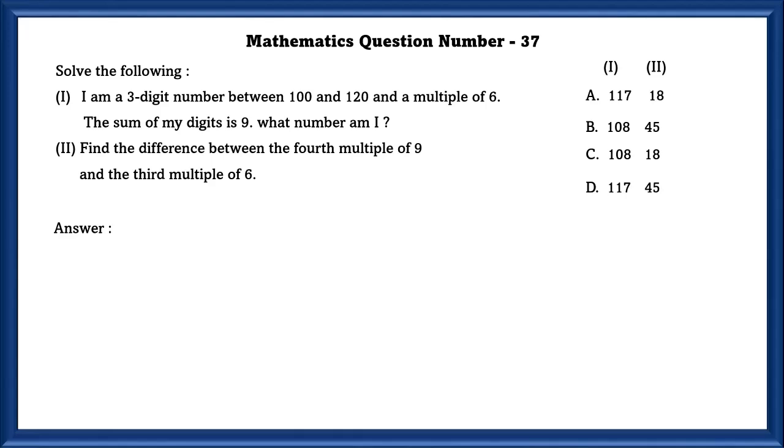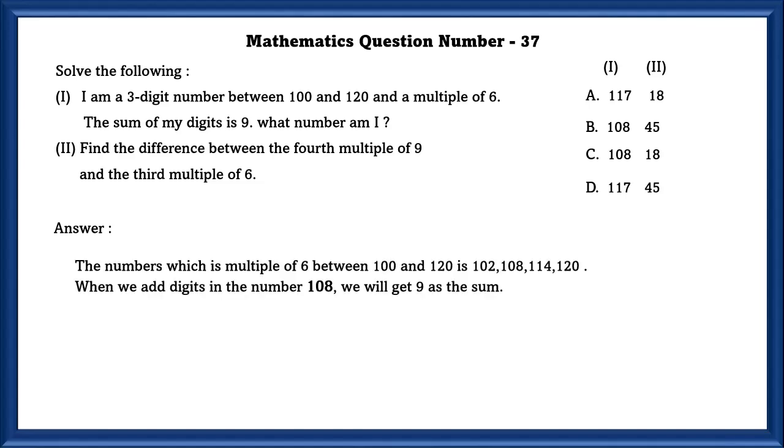Mathematics question number 37. Solve the following. I am a three-digit number between 100 and 120 and a multiple of 6. The sum of my digits is 9. What am I? So the three-digit numbers between 100 and 120 and multiples of 6 are 102, 108, 114, and 120. When we add the digits, we should get 9 as the sum. So as we can see here, if we add 108, we will get 9 as the sum.